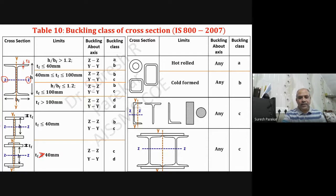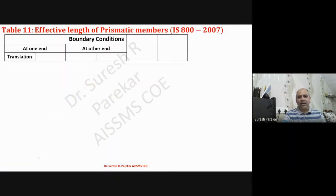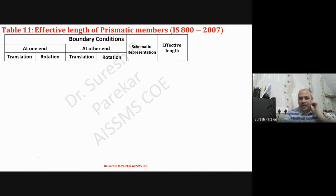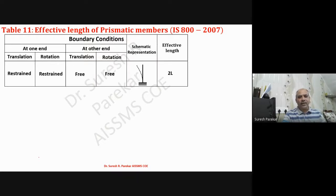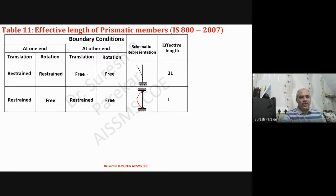One thing to keep in mind from Table 10: tf greater than 40 mm is the threshold for welded sections. Moving to Table 11 — effective length of prismatic members — we have boundary conditions listed with columns for: one end, other end, translation restraint, rotation restraint, schematic representation, and effective length. For the first case, both translation and rotation are restrained at one end (fixed support) and both are free at the other end (free/cantilever end).